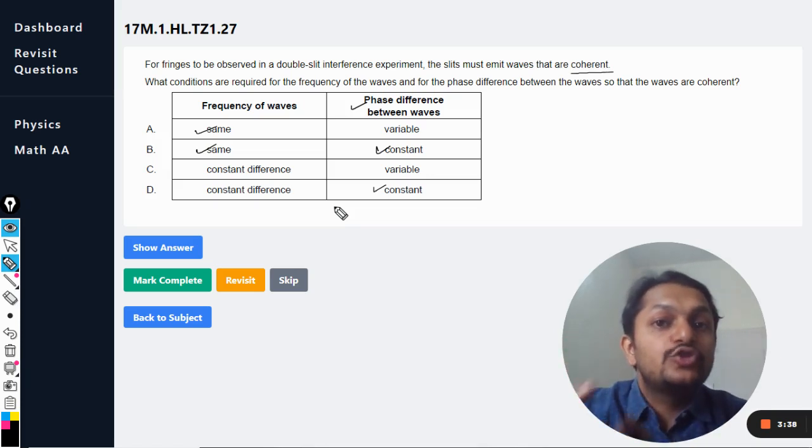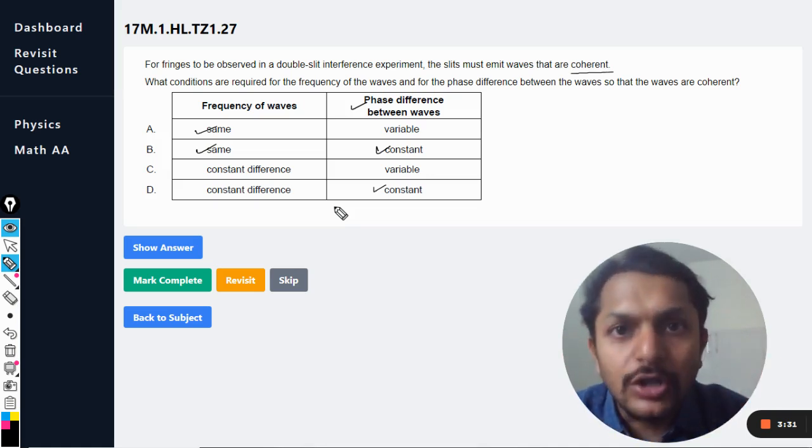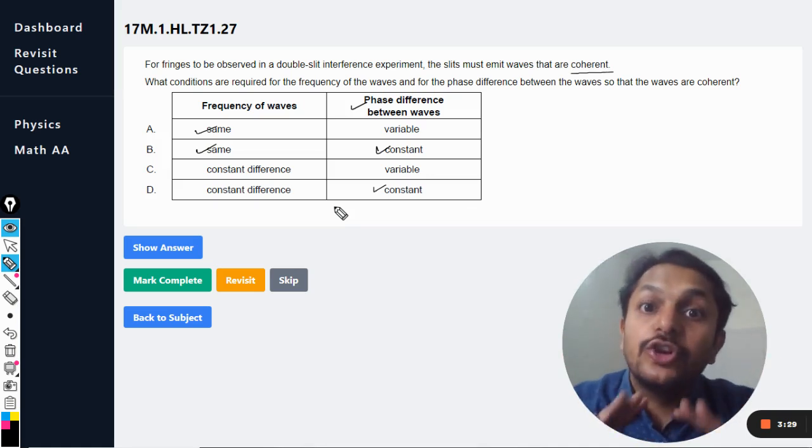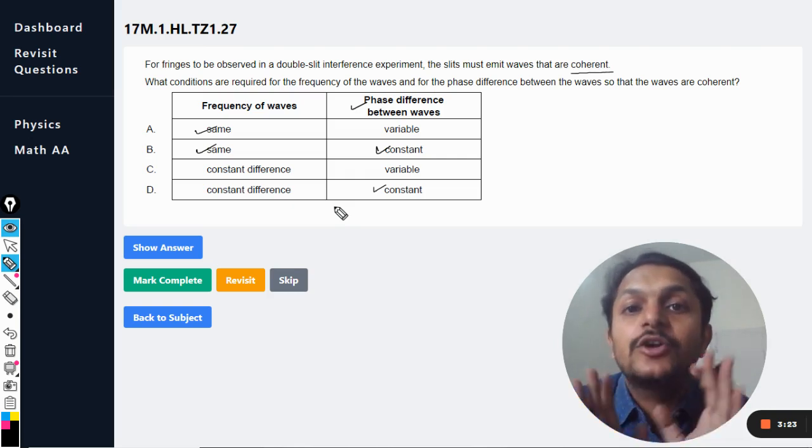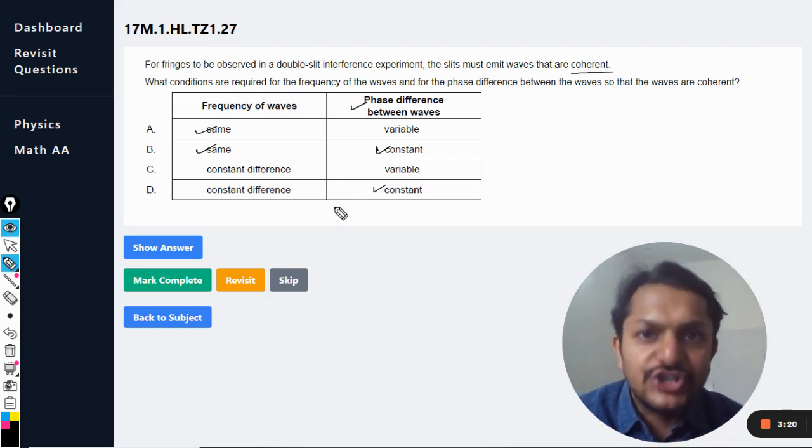When the waves are superposing each other, the initial phase difference may or may not be zero, but it has to be constant. If it is zero, it should remain zero. If it is not zero, like π/3 or π/4, it should remain constant at that value—it should not change.